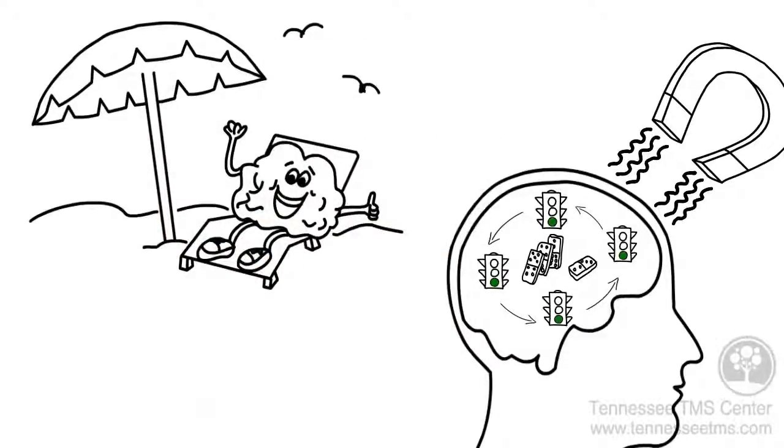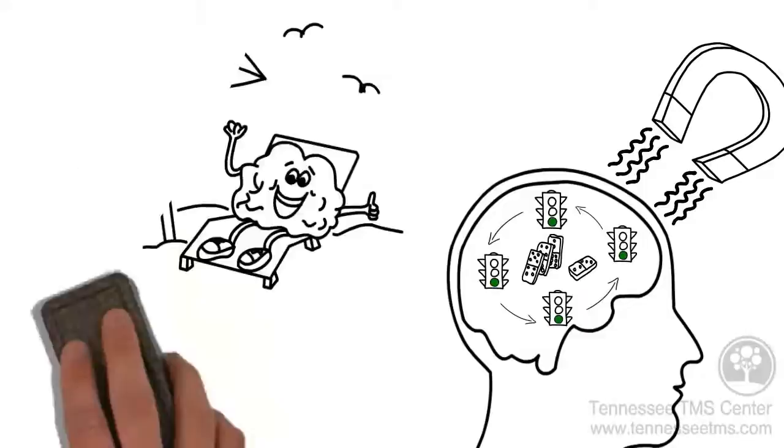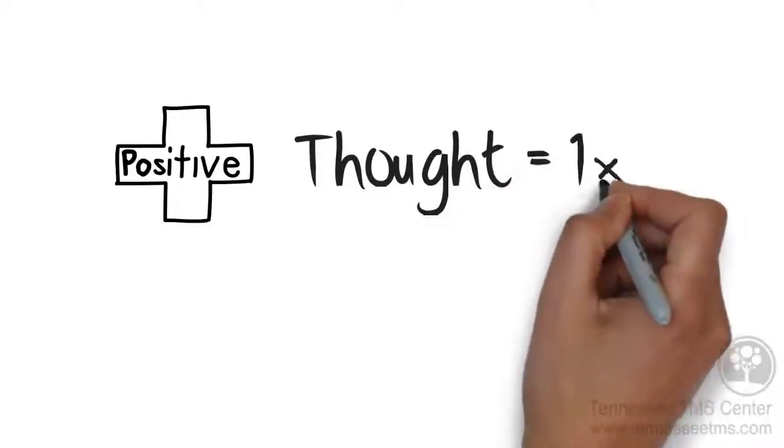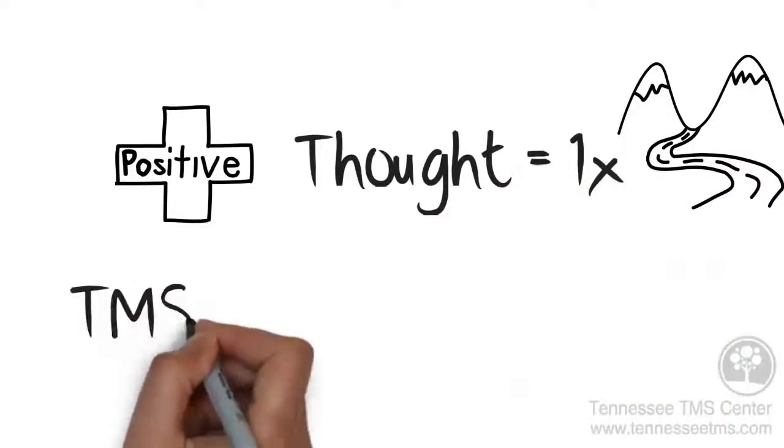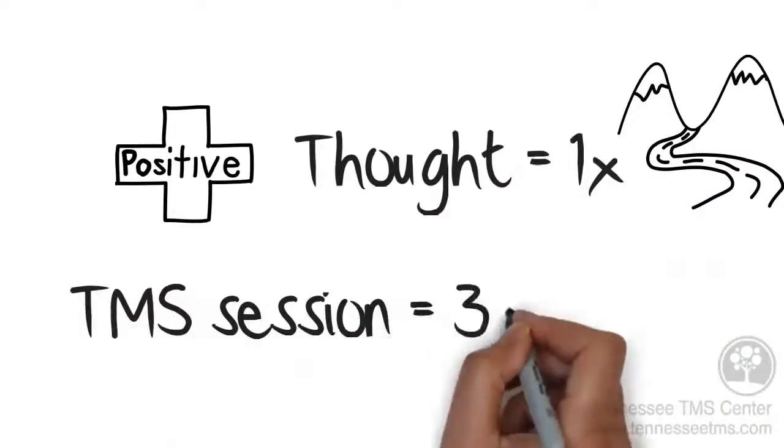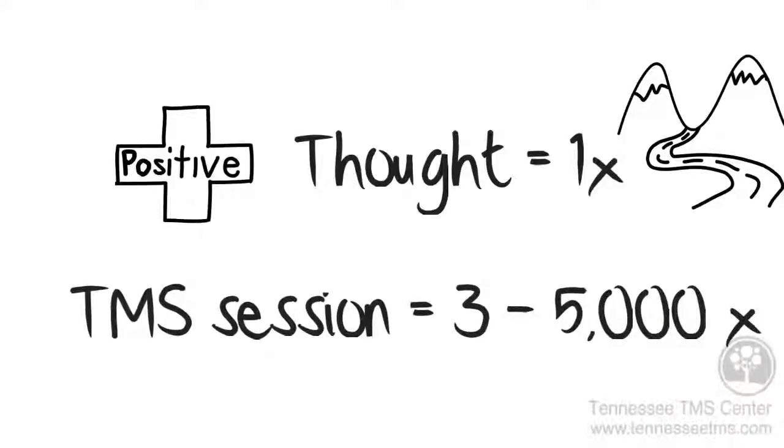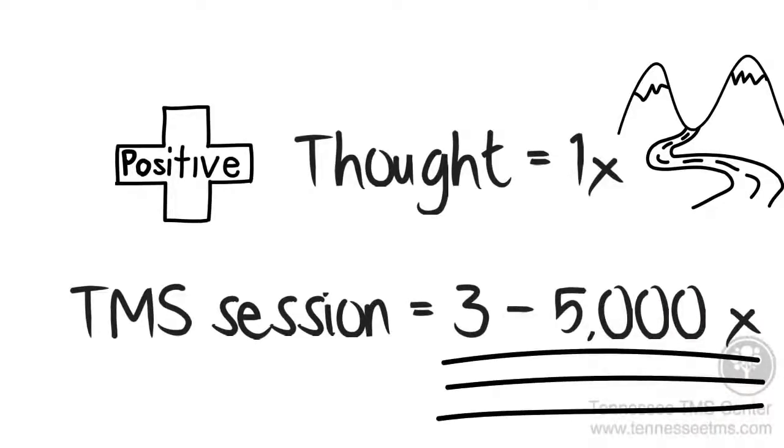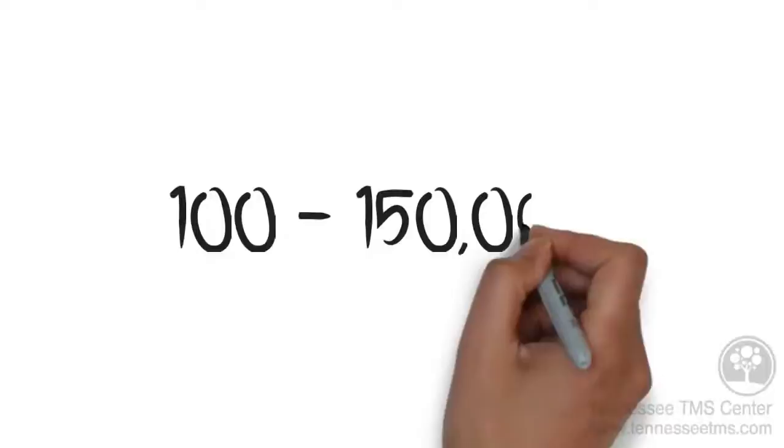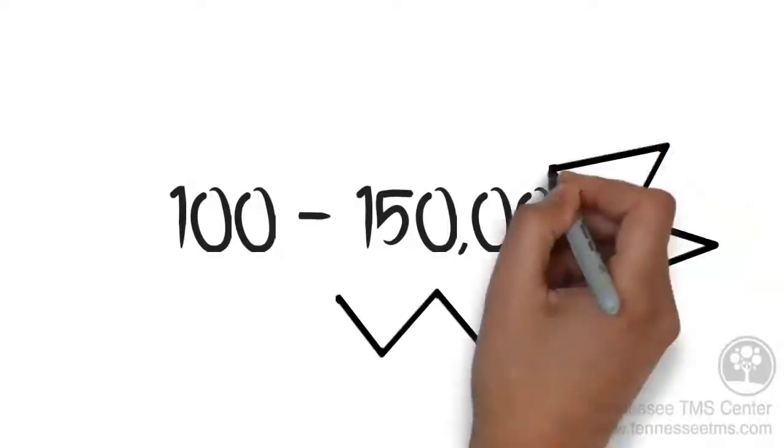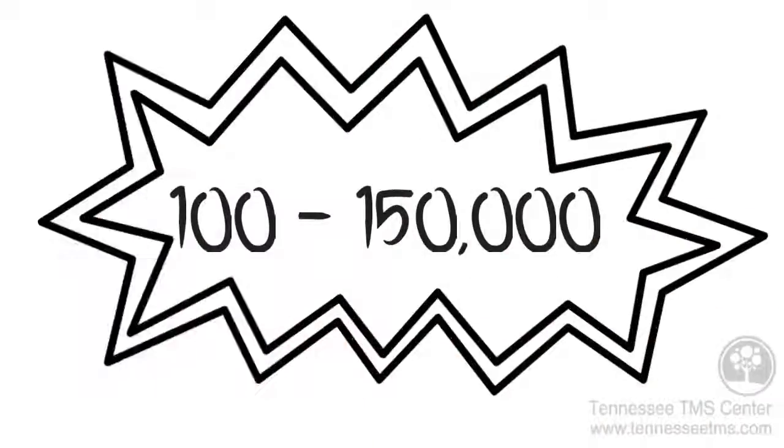Remember him? Here's where TMS shines as a treatment. While a singular positive thought can practice a particular pathway once, a singular TMS treatment will practice that positive pathway 3,000 to 5,000 times. A typical course of TMS is around 30 sessions and stimulates positive pathways between 100,000 to 150,000 times.